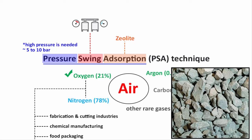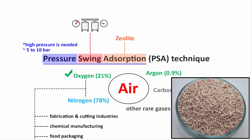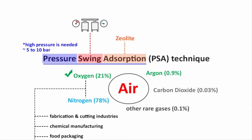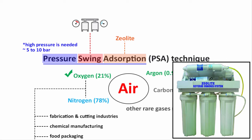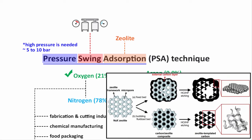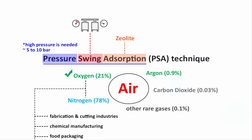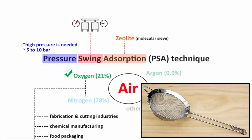Zeolite is found naturally as well as produced industrially. Zeolites are minerals that contain mainly aluminum and silicon compounds. They are used as drying agents in detergents and in water and air purifiers. Zeolite contains micropores that absorb nitrogen from air, which is why it is used in this technology for the production of oxygen — it causes oxygen to get separated from air.